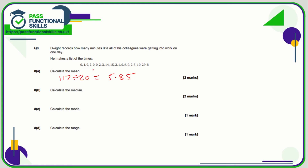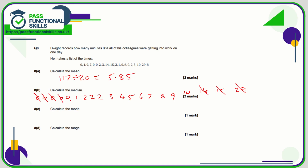The median is the middle value when put in order. There are six 0s, a 1, three 2s, then 3, 4, 5, 6, 7, 8, 9, 10, 14, 15, 20, and 29. To find the middle, chop one off each end and keep going until we isolate one or two in the middle. It's an even number so we get two — we've isolated 3 and 4. Halfway between 3 and 4 is 3.5, so the median is 3.5. The mode is 0 because zero crops up more than any other number, and the range is 29 minus 0, which is 29.